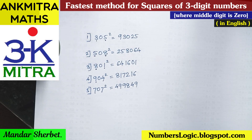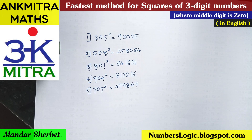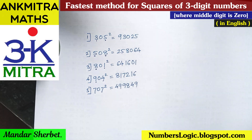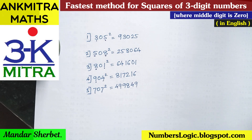Try these examples and practice more three digit numbers where the middle digit is 0. Try different such numbers, practice them, and you'll be able to solve this in a matter of 2 or 3 seconds. All the best! In the next video, I'll be showing a method to find squares of random three digit numbers having any digit in each place.